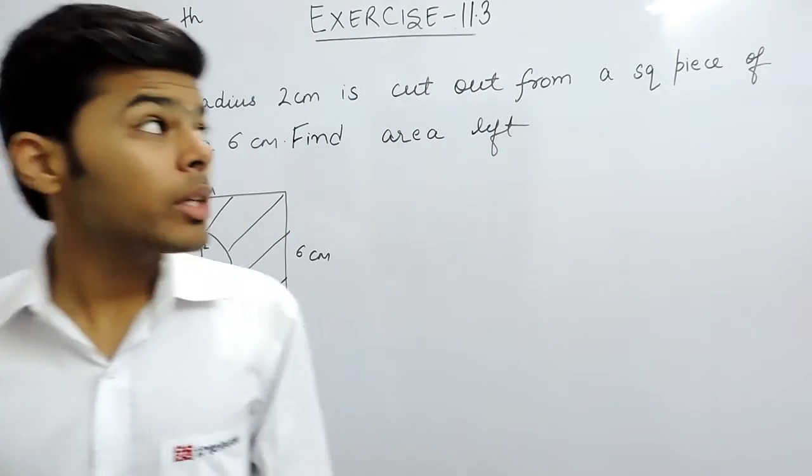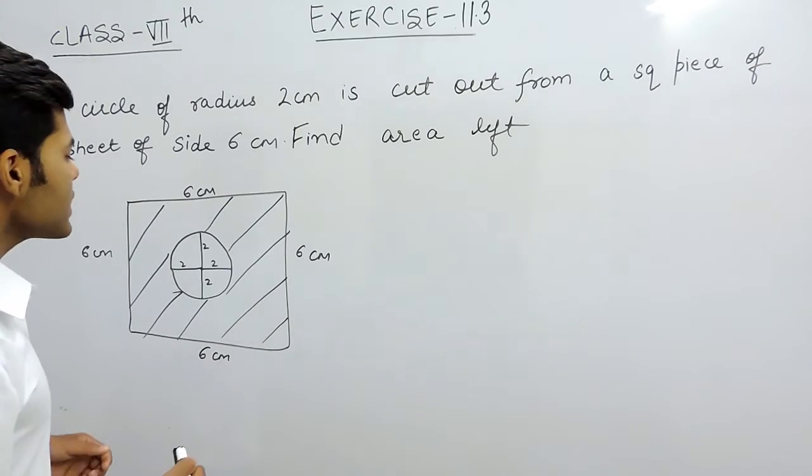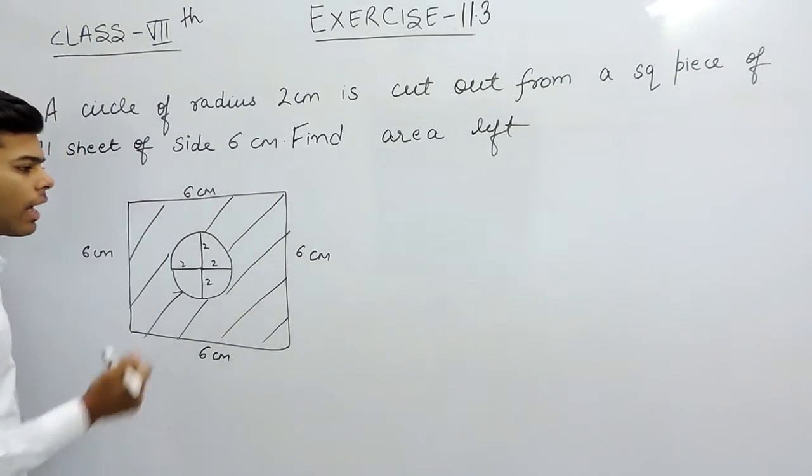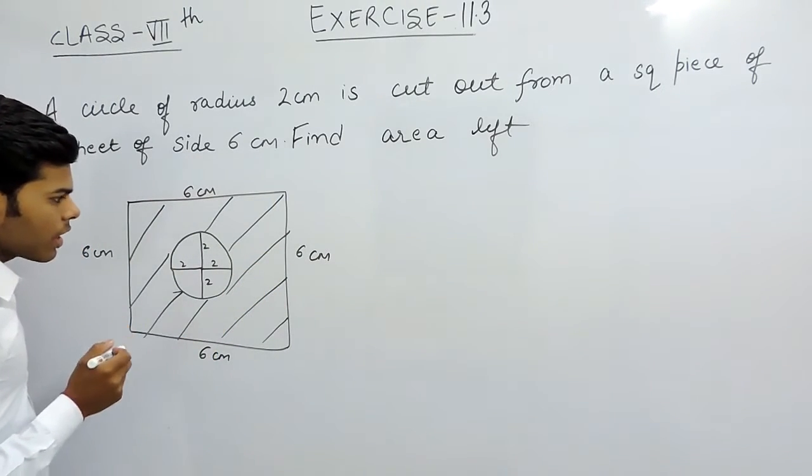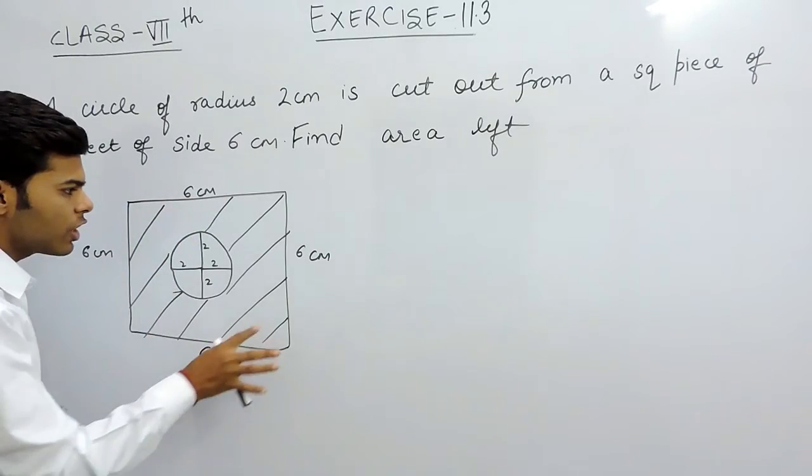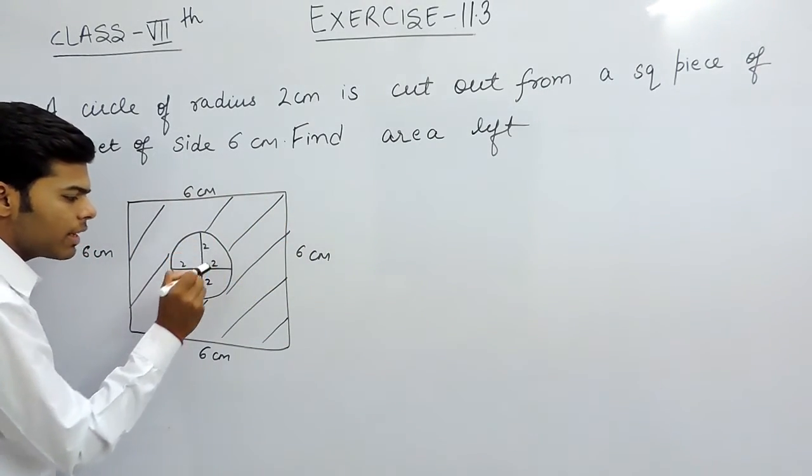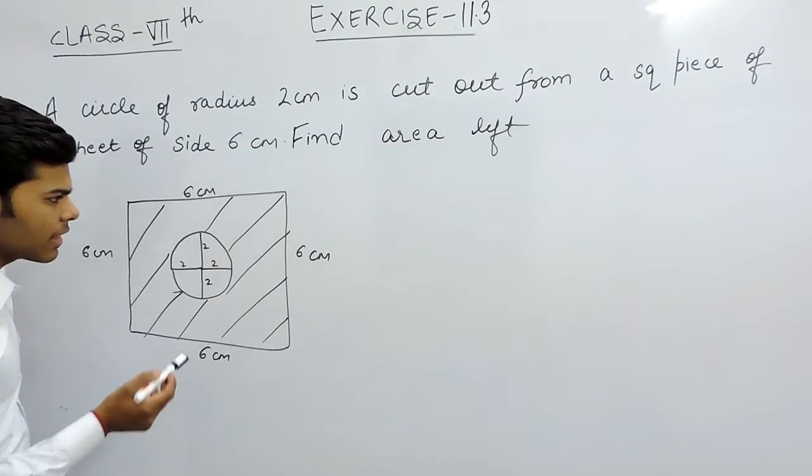Hello everyone, now we will do the 11th question of exercise 11.3. The question says that this is a square sheet of aluminum having a side of 6 cm each. From this sheet of aluminum, a circle of radius 2 cm has been cut out. So we have to find the area of the remaining sheet.